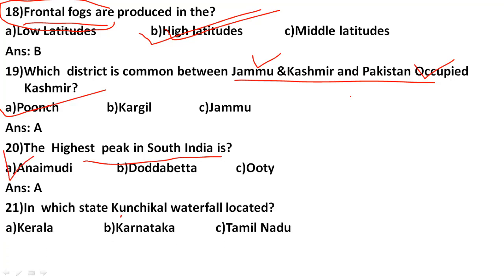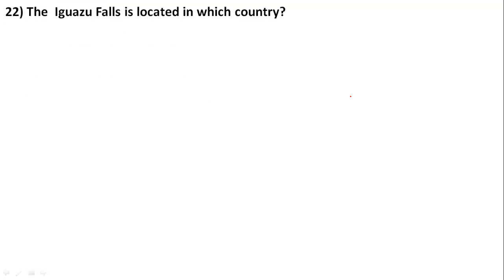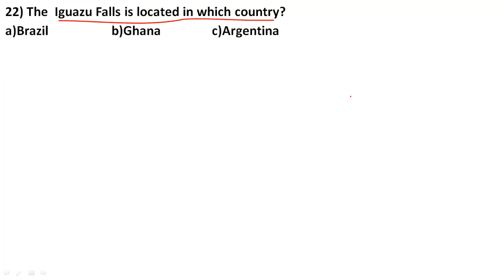In which state is the Kunchikal waterfall located? Options: Kerala, Karnataka, Tamil Nadu. The correct answer is B, Karnataka. Kunchikal waterfall is located in Karnataka.